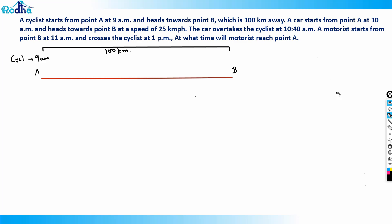There's also a car — let's draw a car here. The car starts from point A at 10 am, heading towards point B at a speed of 25 kilometers per hour. The car overtakes the cyclist at 10:40 am.